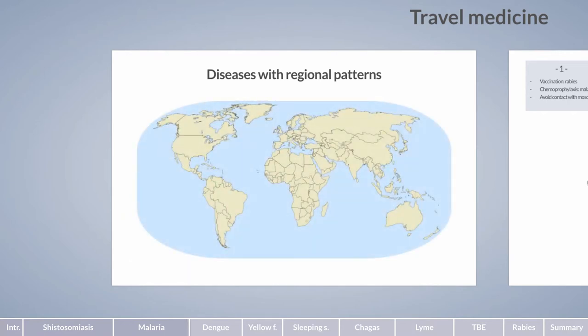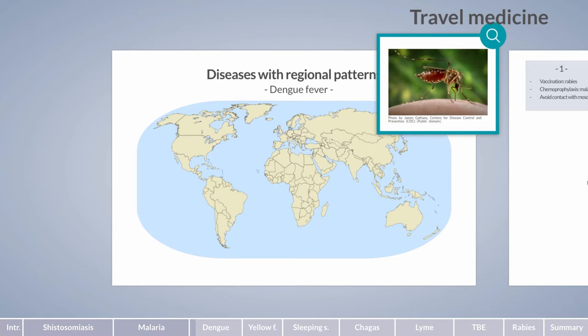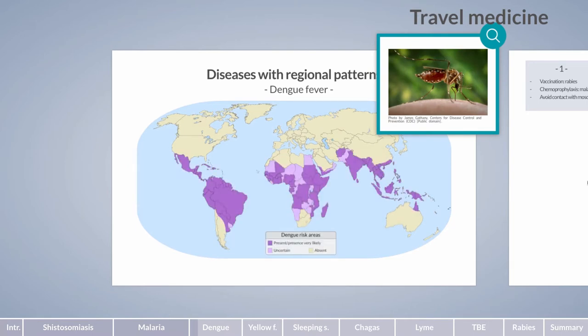Another mosquito-borne febrile disease is dengue fever, caused by infection with dengue virus and primarily transmitted by the Aedes aegypti mosquito. Risk areas of dengue infection cover most of the distribution areas of Aedes aegypti. Dengue is found in tropical and subtropical regions worldwide, especially in Southeast Asia, but also in Central and South America, Africa, Oceania, and Northeast Australia.